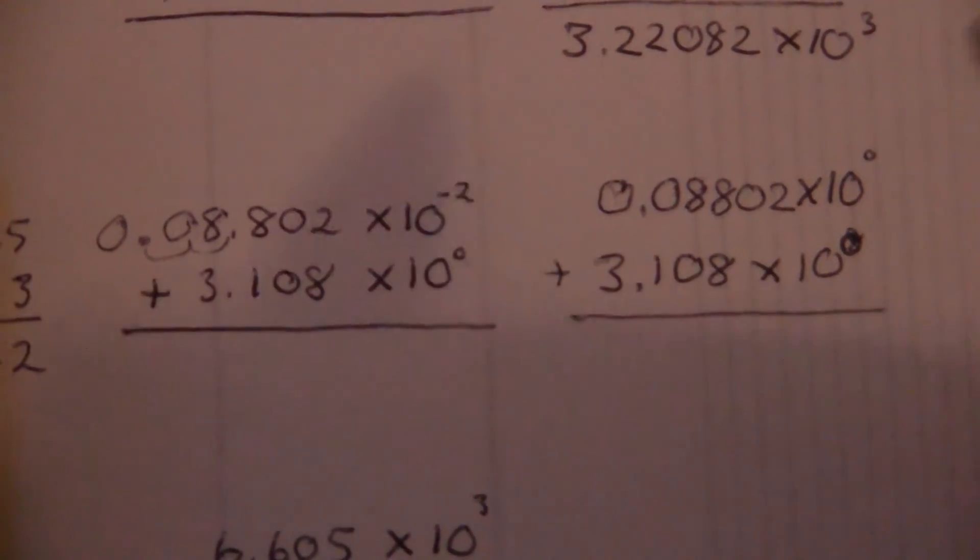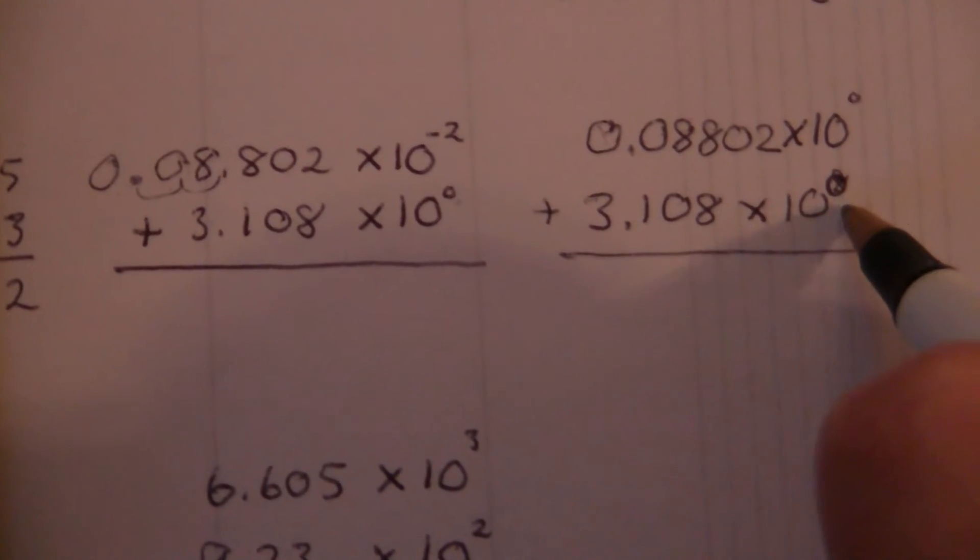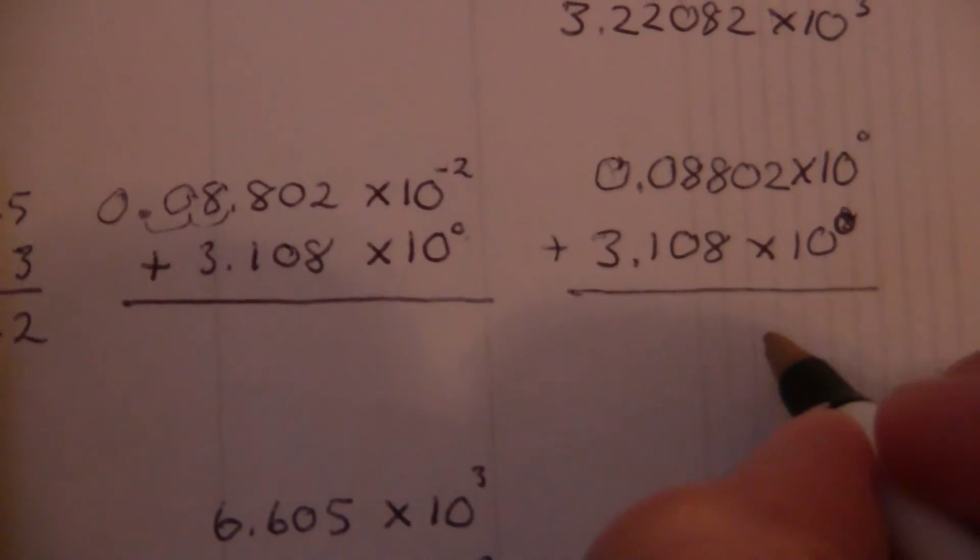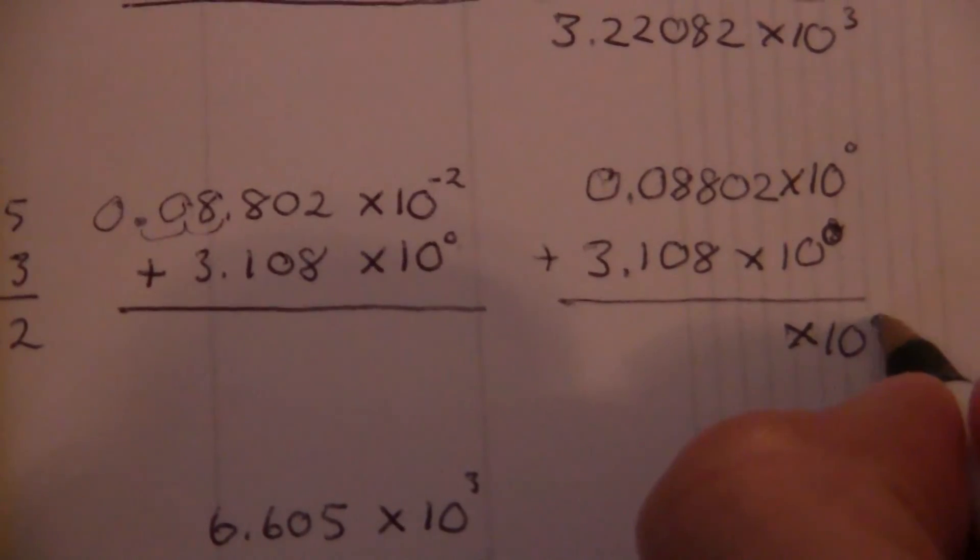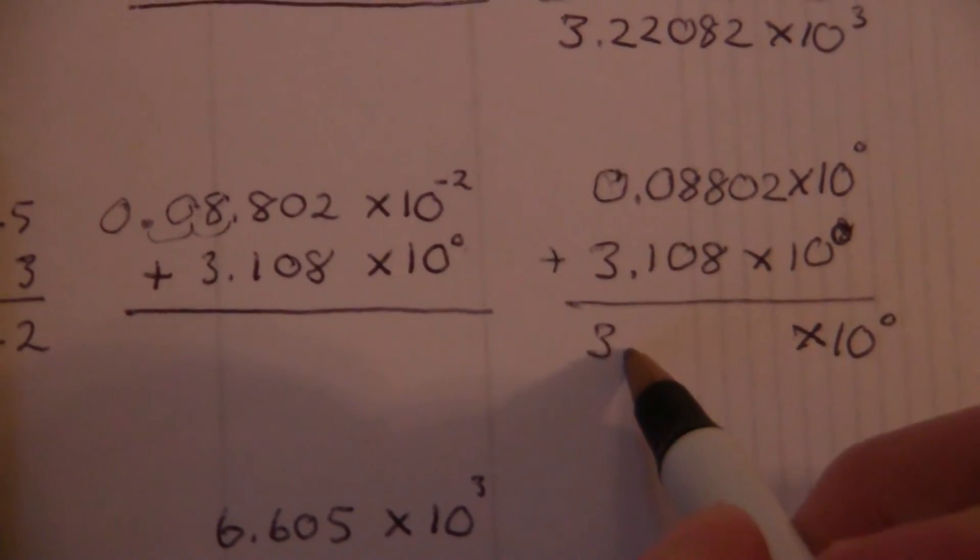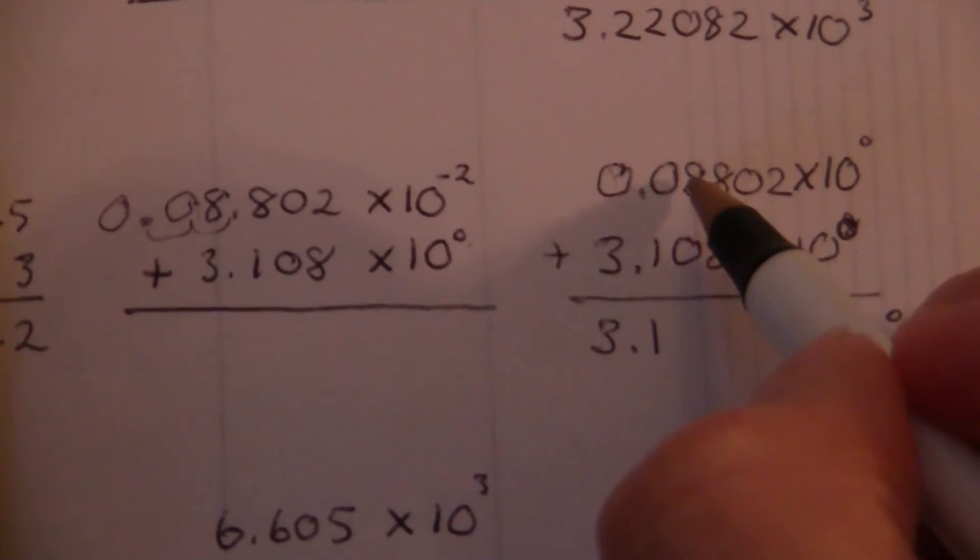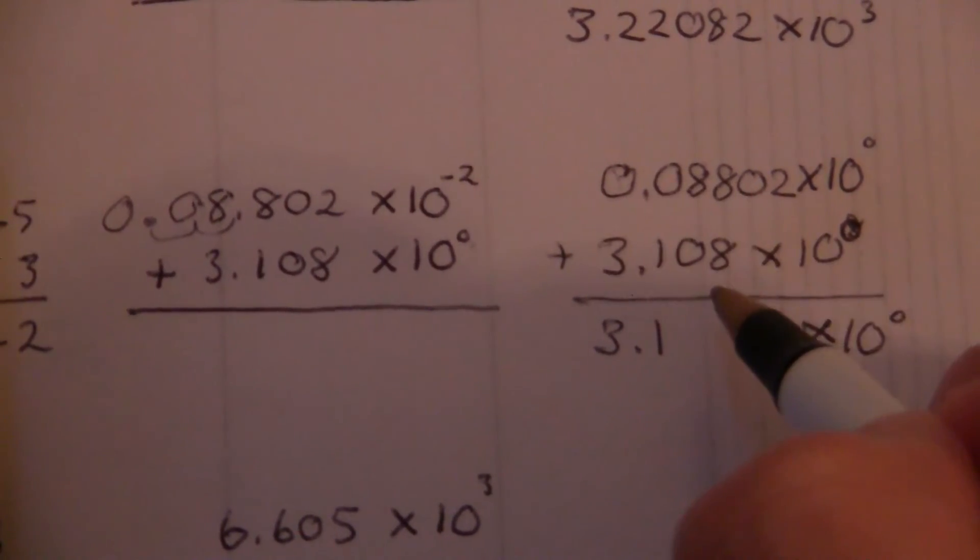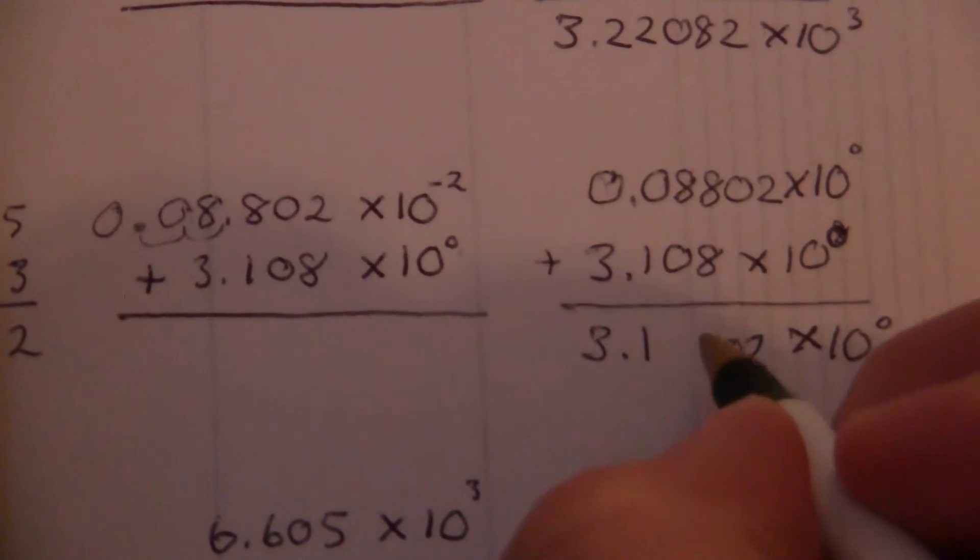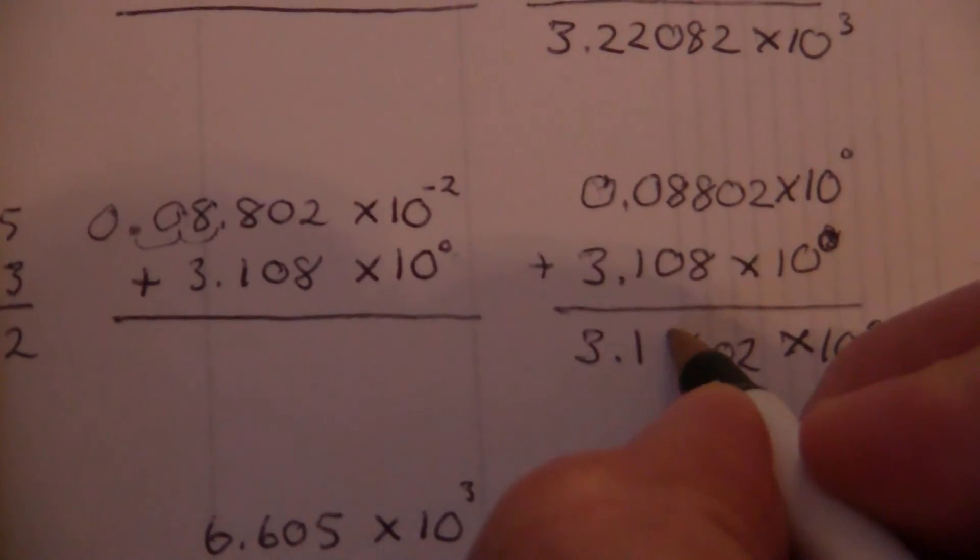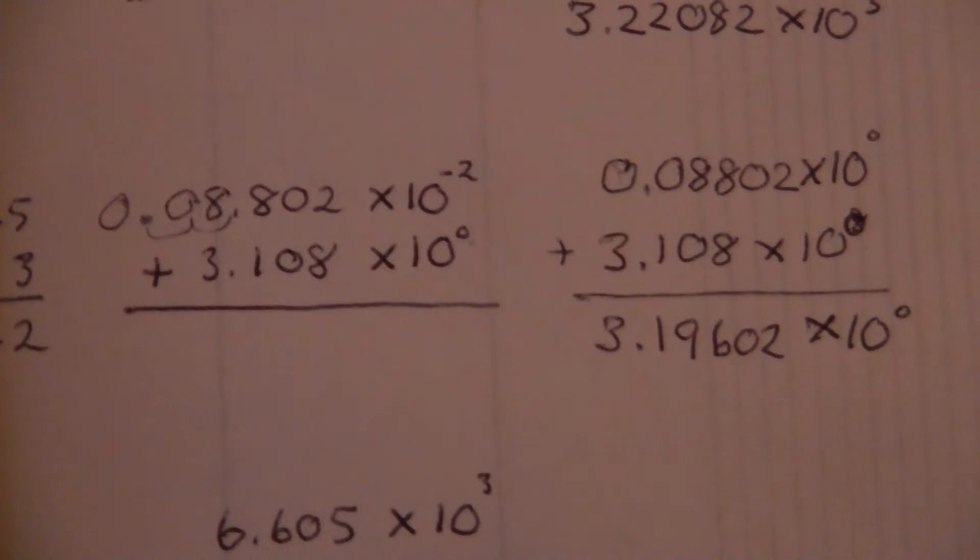Now we add these together. Now our decimals are aligned, because we have them both in the same place. I'll go ahead and write this down here. So we have 3.1, and this, normally we start from this side. 2, 0, and then 8 and 8 is 16, so we carry the 1, and we have 9 there. So there is our answer.